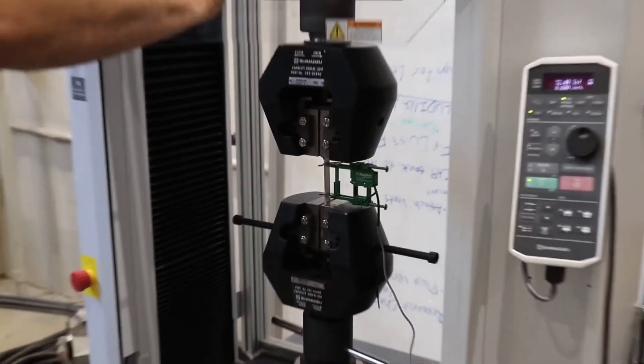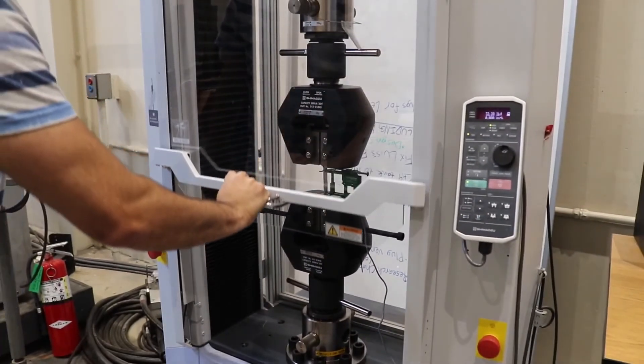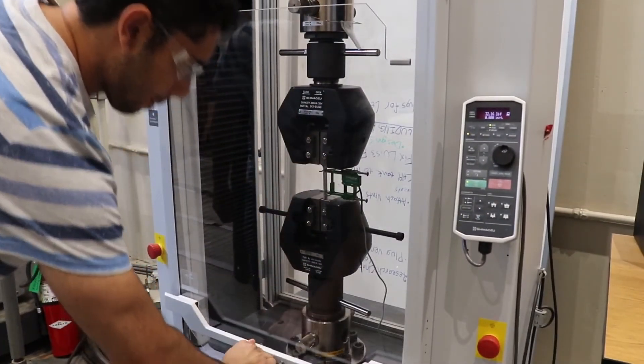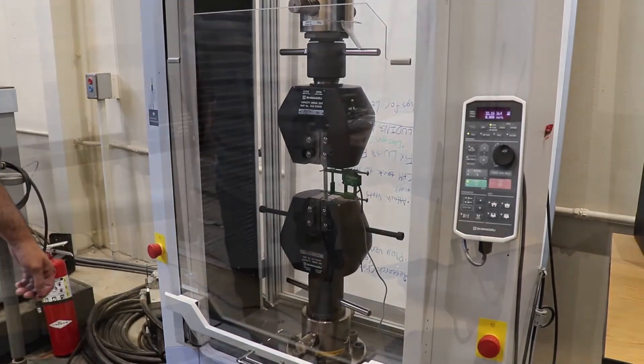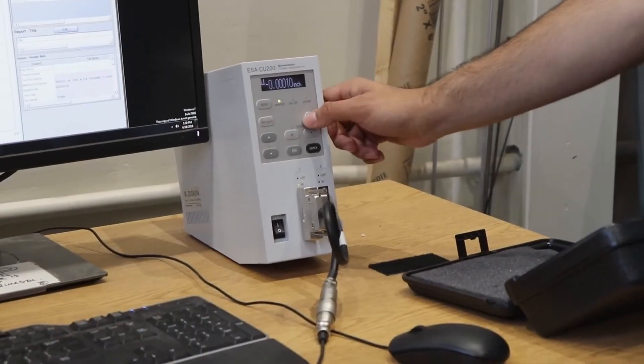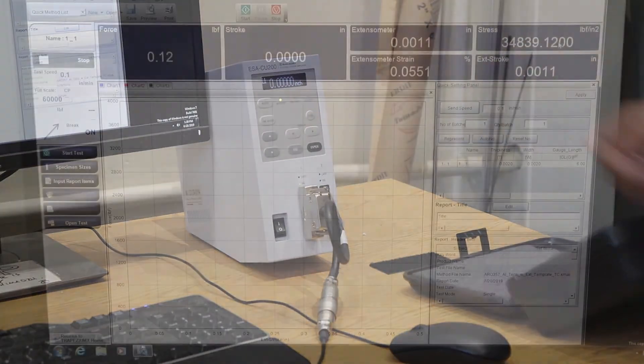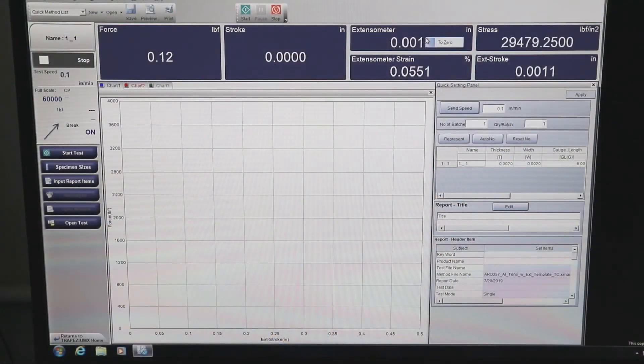To perform the experiment, the shield needs to be engaged fully in its downward position. At this point, we will zero the extensometer on the ESA and also within the software by right-clicking on the extensometer and going to zero.